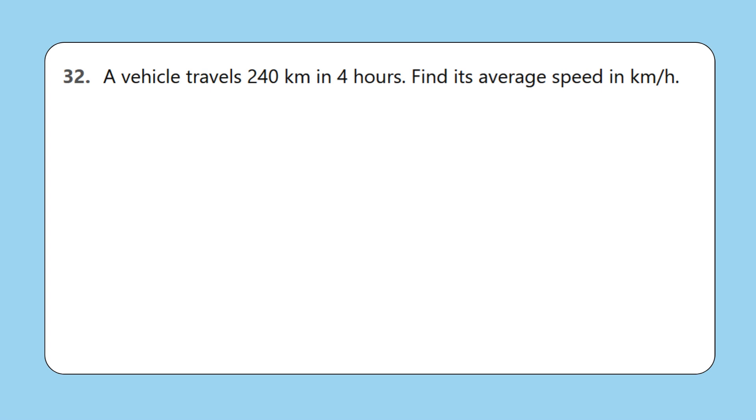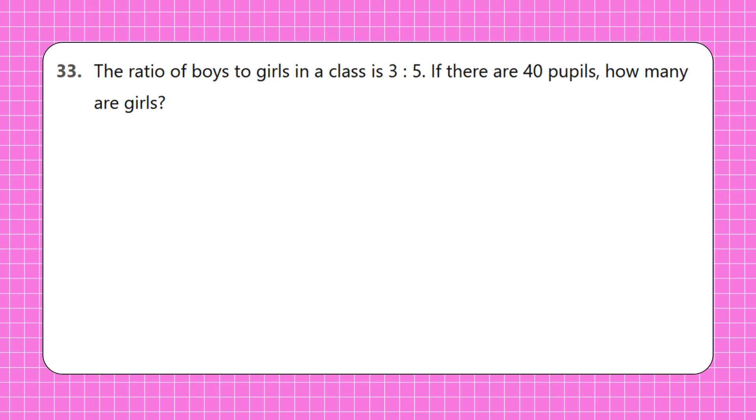32. A vehicle travels 240 kilometers in 4 hours. Find its average speed in km/h. 33. The ratio of boys to girls in a class is 3:5. If there are 40 pupils, how many are girls?